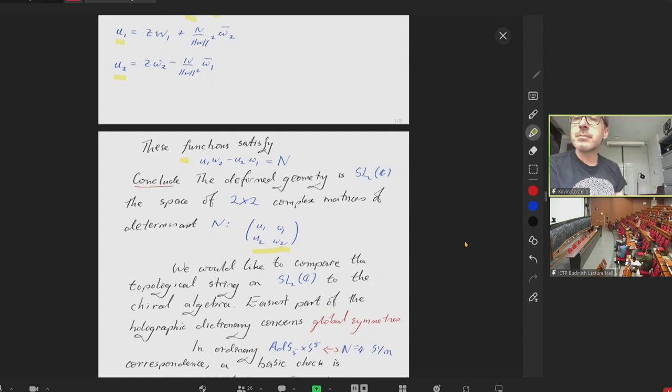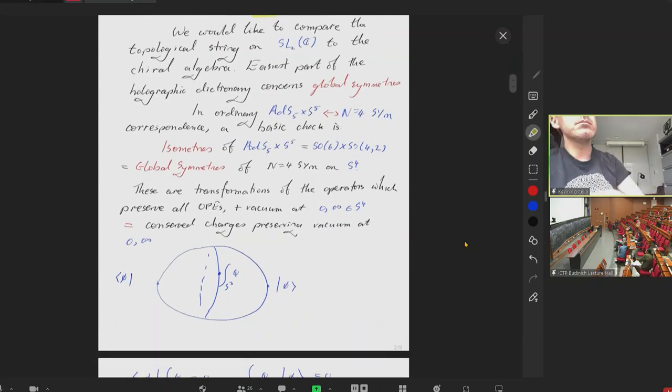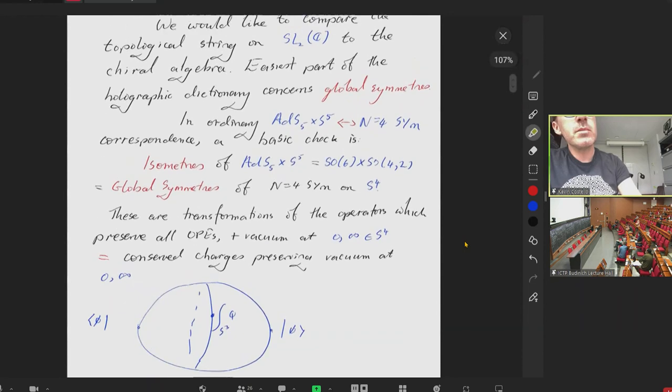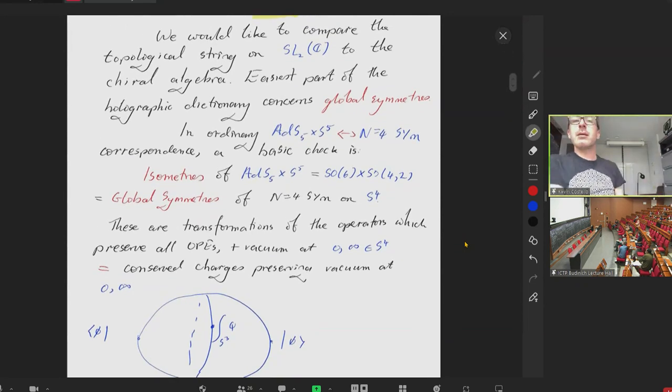However, they're not independent. As you can see, u1 w2 minus u2 w1 equals n, which is entirely elementary. So we conclude that the deformed geometry is that defined by this equation. We can think of this as the space of two by two matrices with column vectors u1, u2, w1, w2, whose determinant is n. I can absorb the factor of n into a rescaling, so you might as well think of this as matrices with determinant one. So the geometry is SL(2,C). This is our topological string derivation of the back reaction.